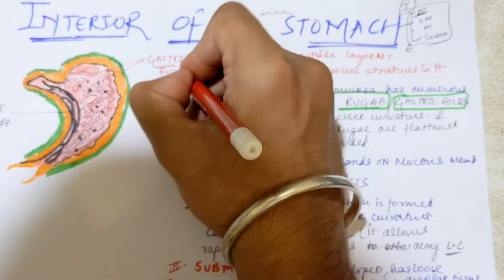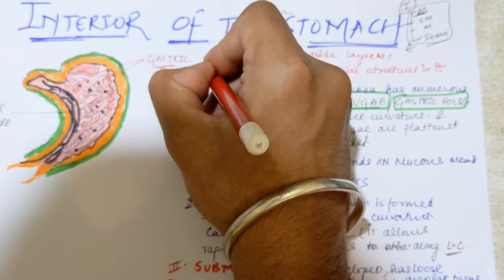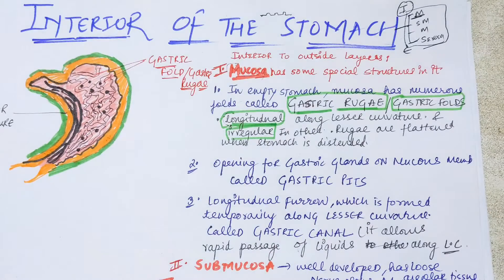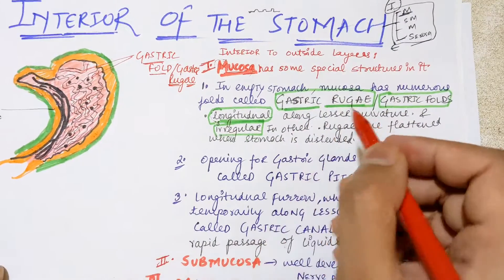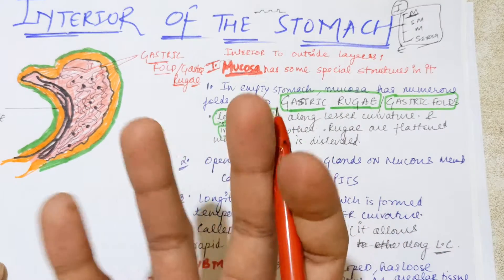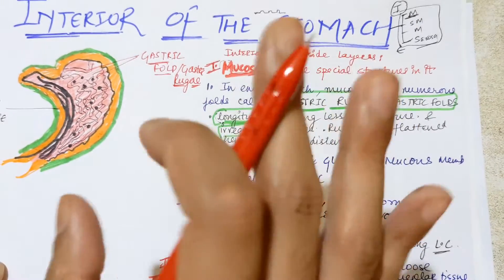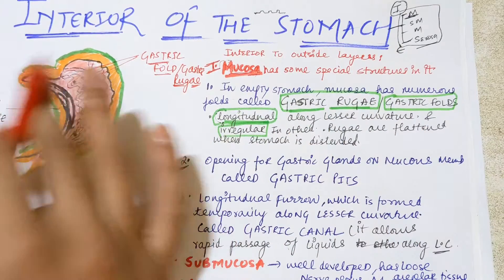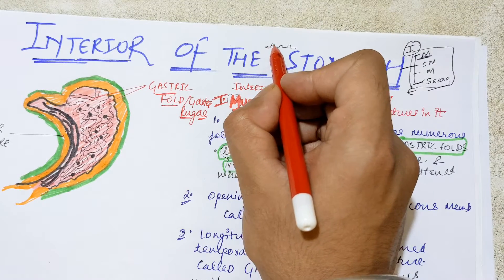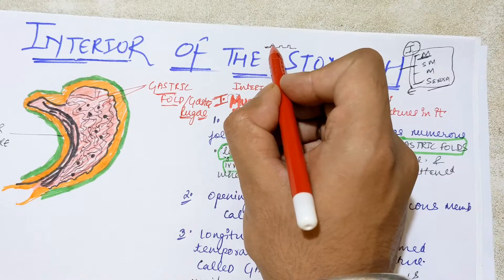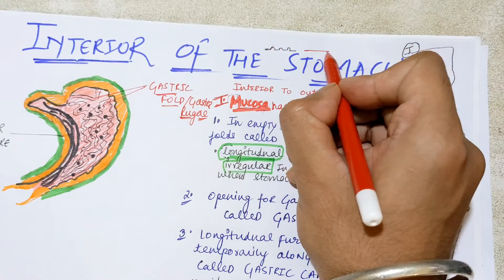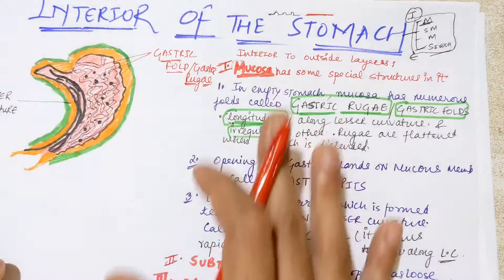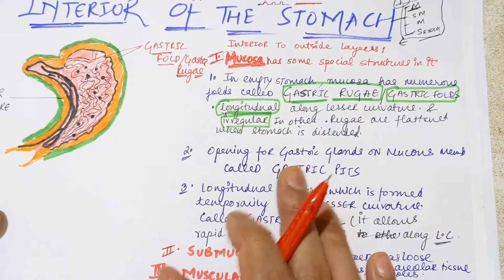So gastric rugae is the important name to remember here. When the stomach is distended — that is, when it is full — these folds become flat and are not visible. The folds form a rough surface only when the stomach is empty; when full, the surface becomes flat with no visible folds.